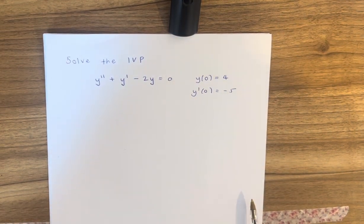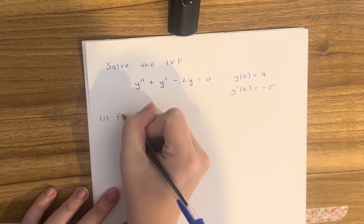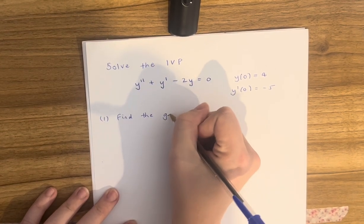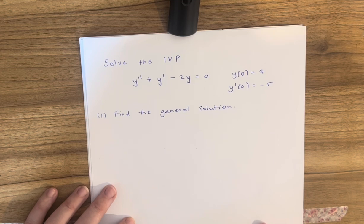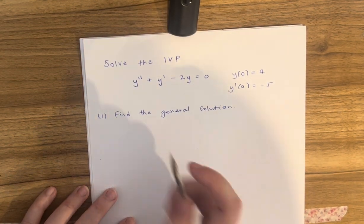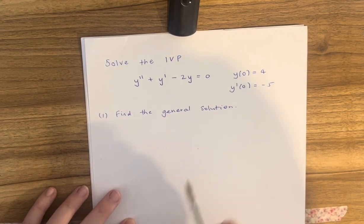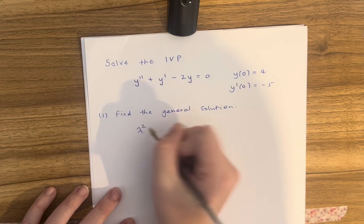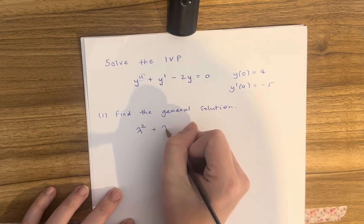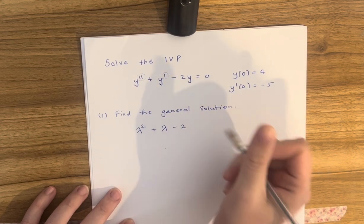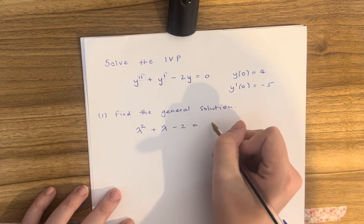The first step to solving any initial value problem is to find the general solution. We do this by finding the characteristic equation, changing the terms into lambdas. We get lambda squared because there are two dashes, plus lambda because it's only one dash, minus 2, and nothing extra because it's just y — so it equals 0.